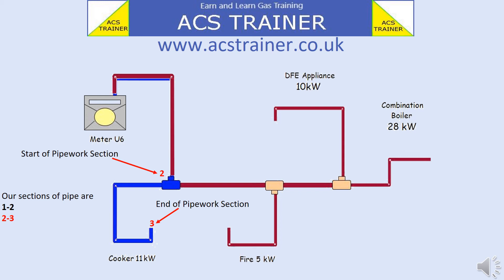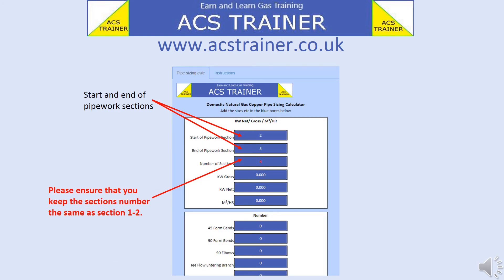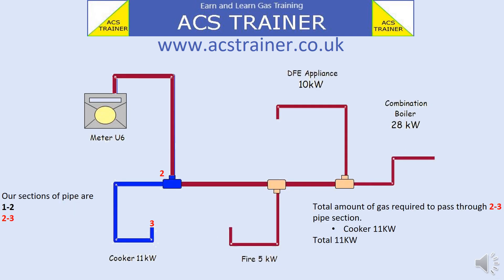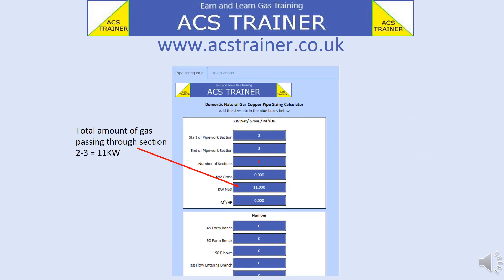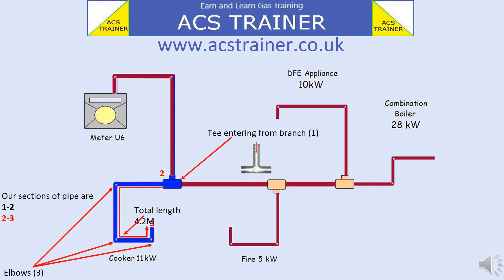We need to follow the same principles for all other sections. The next section is two to three, highlighted blue. Add the section numbers — start of pipe work section and end of pipe work section. Do not change the number of sections; this must stay the same as for the first section. Ours is four. Add the total amount of gas which could possibly pass through the section of pipe, which is 11 kilowatts. None of the other appliances have gas passing through this section. On the calculator, add the total gas needed for the section — ours is 11 kilowatts.